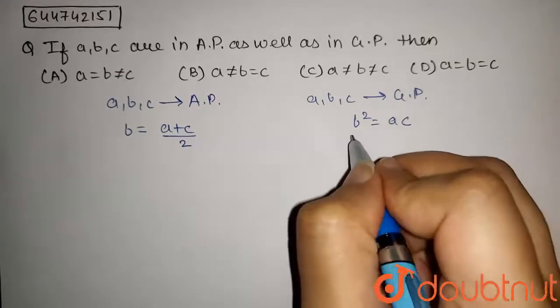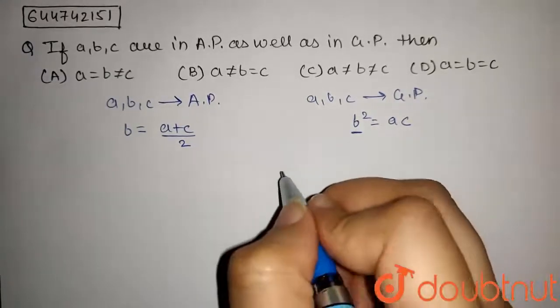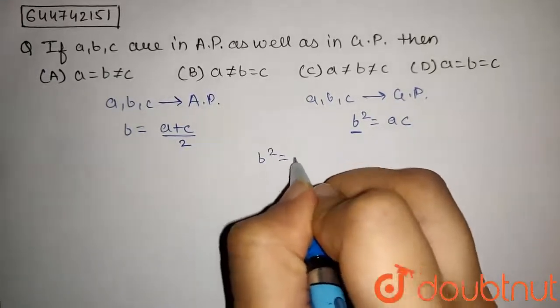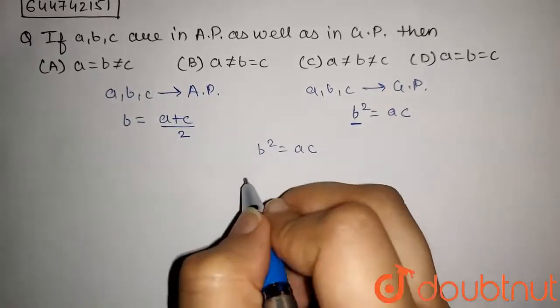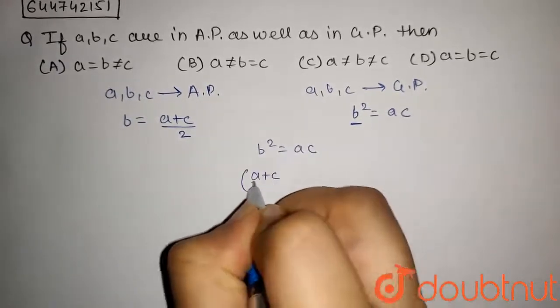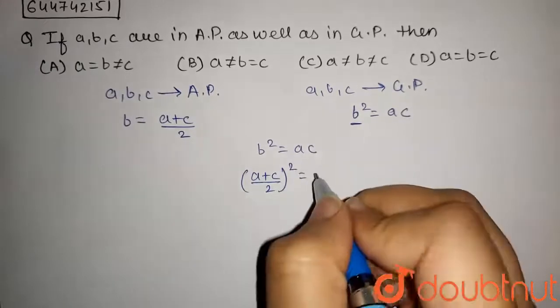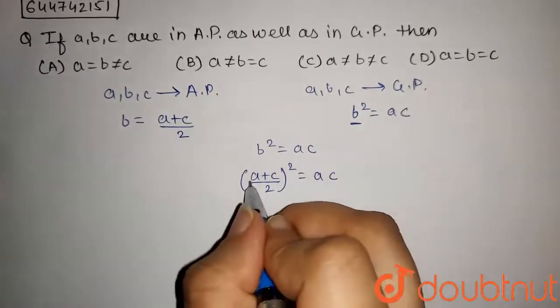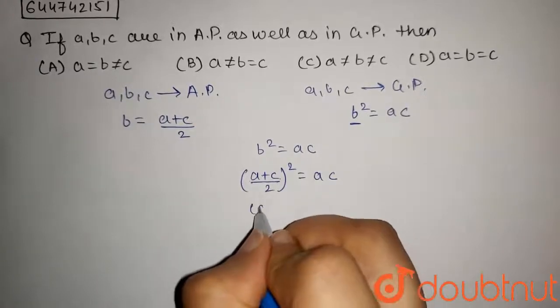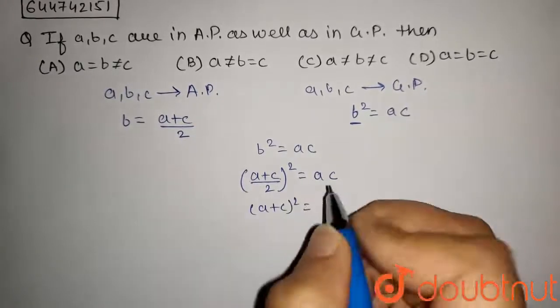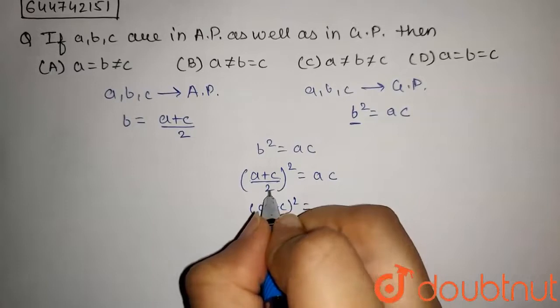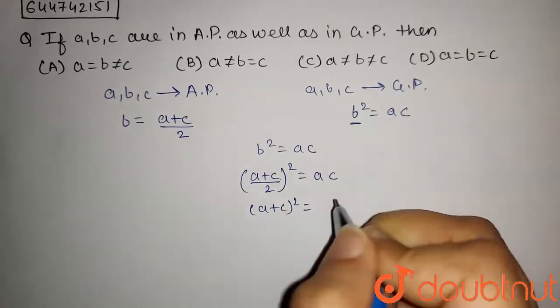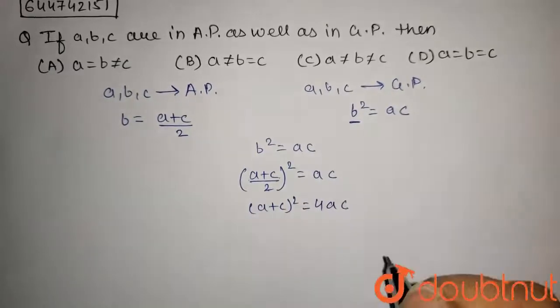Now putting the value of B in this equation, we have B square equals AC. Substituting, we get A plus C by 2 square equals AC, or A plus C to the whole square is equals to 4AC.